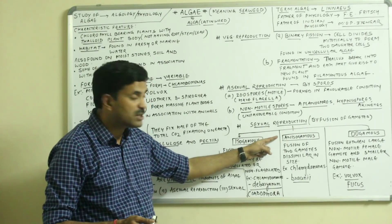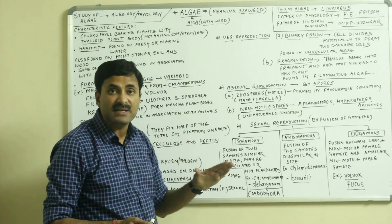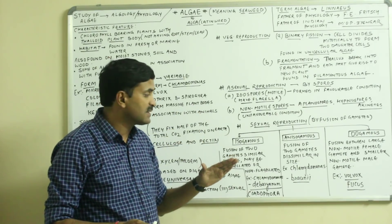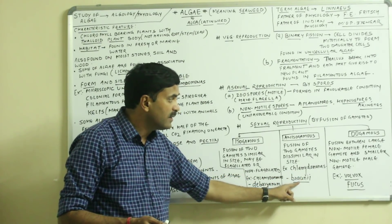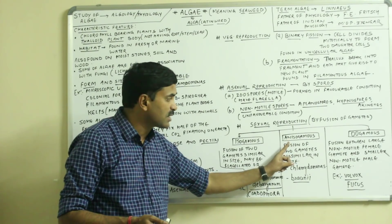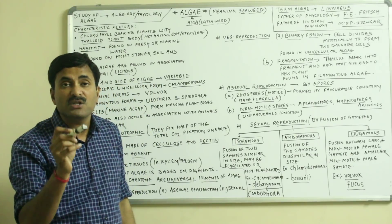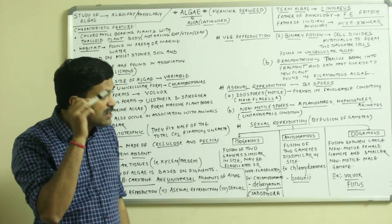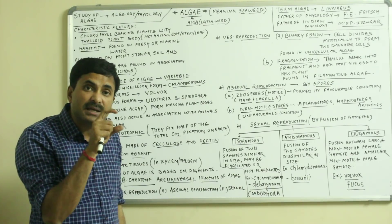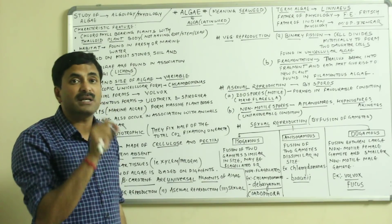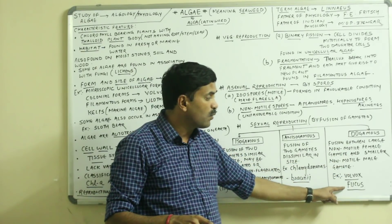In anisogamous reproduction, as the name indicates, the fusing gametes are not similar in size — they are dissimilar in size. An example is Chlamydomonas braunii, which has the anisogamous type of sexual reproduction. In oogamous condition, the female gamete is non-motile and large in size, and the male gamete is smaller in size but motile. Oogamous condition is found in Volvox and Fucus.